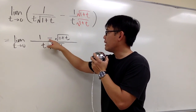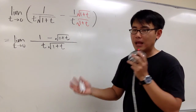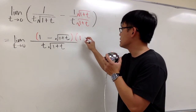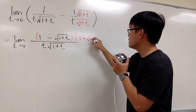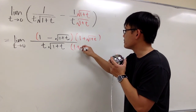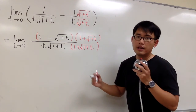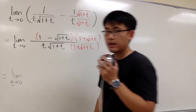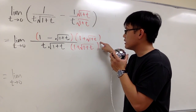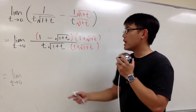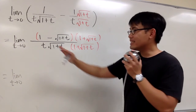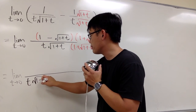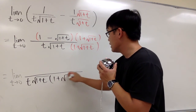On the top we have 1 minus the square root, so let's try to multiply by its conjugate. We take this and multiply by 1 plus the square root of 1 plus t on the top and also on the bottom. The purpose of the conjugate is to fix the top. On the bottom, we are not going to touch it — we'll just leave it as t times square root of 1 plus t times 1 plus square root of 1 plus t.